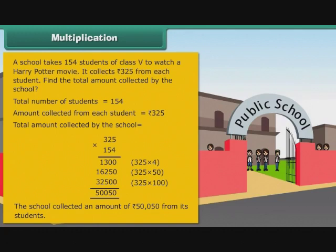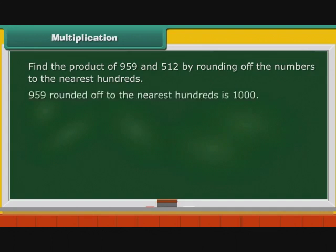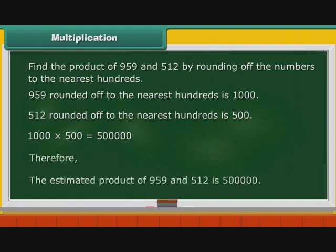Now let us estimate the product of two numbers. Find the product of 959 and 512 by rounding off the numbers to the nearest hundreds. 959 rounded off to the nearest hundreds is 1000. 512 rounded off to the nearest hundreds is 500. Therefore, the estimated product of 959 and 512 is 500000.